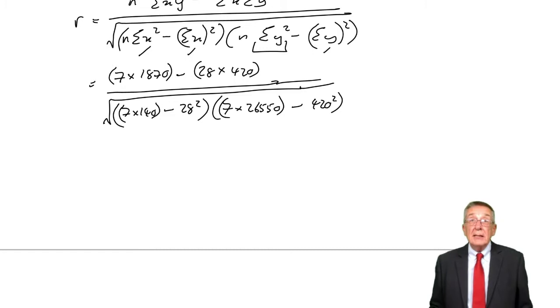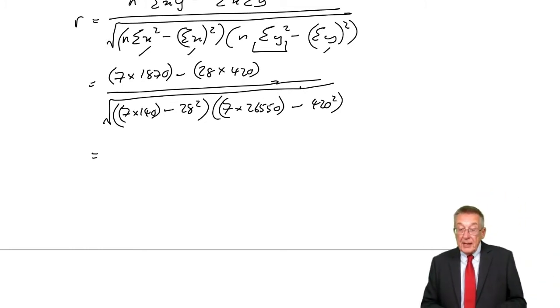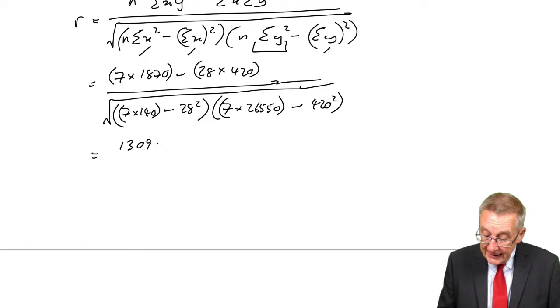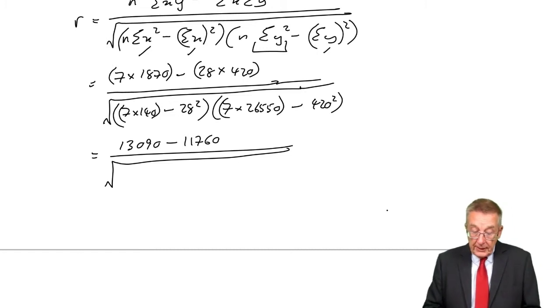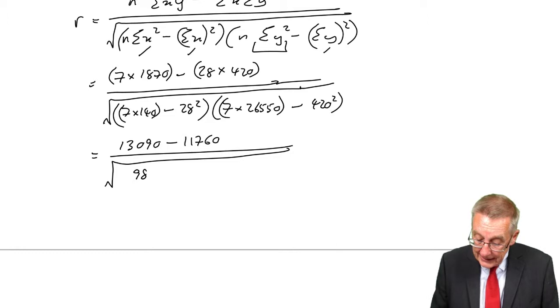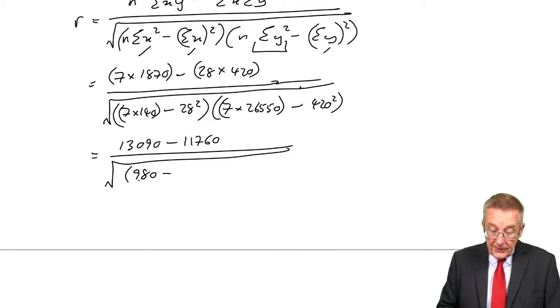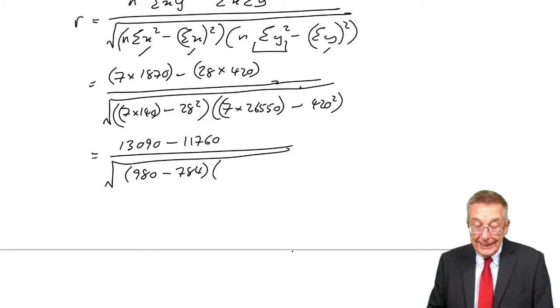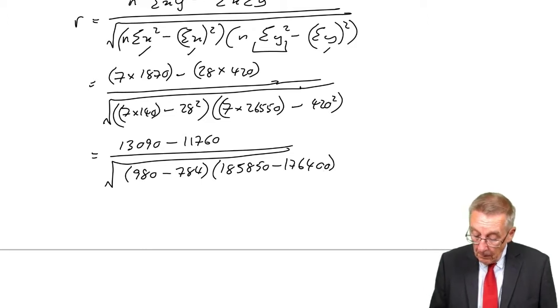It's up to you to make sure you're efficient with your calculator. For everybody's benefit, I'll do step by step. The top: 7 times 1870 is 13,090, minus 28 times 420 is 11,760, divided by the square root of 7 times 140 is 980 minus 784, times 185,850 minus 176,400.